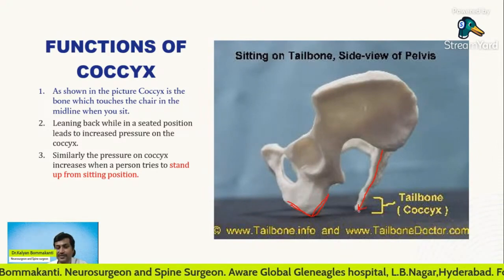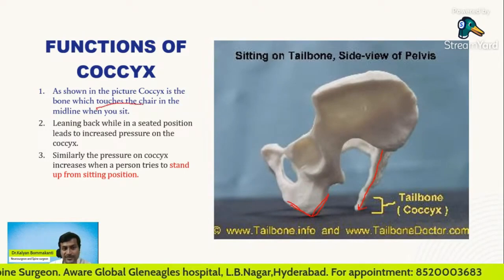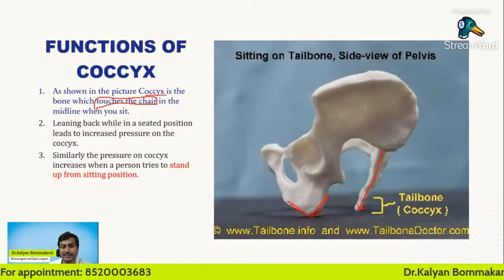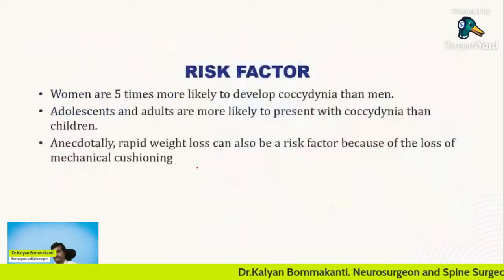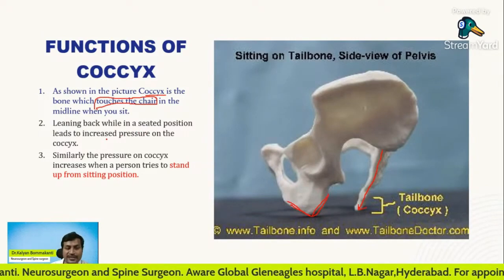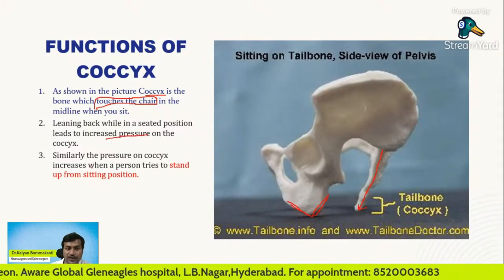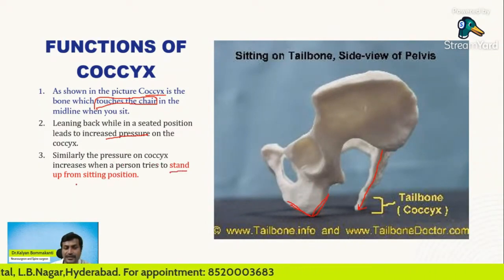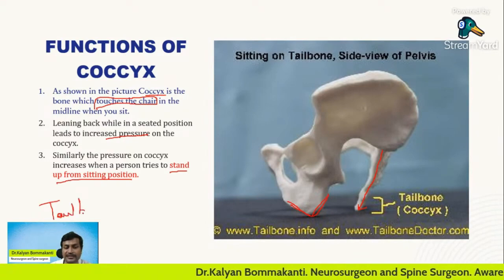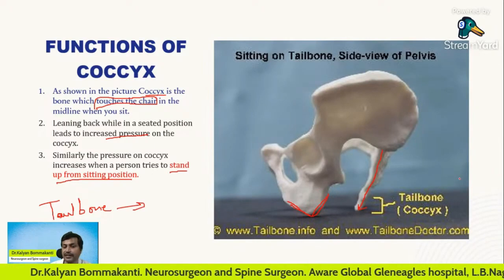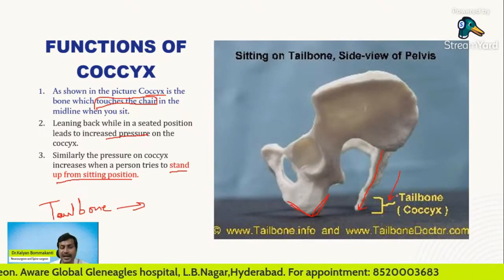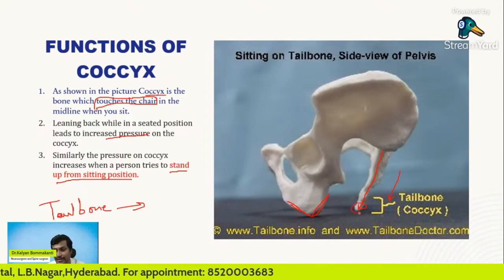These three parts of your sacrum and pelvis touch the chair when you sit, providing support to your body. In the midline, what touches the chair is the coccyx. Particularly when you lean backward in a sitting position, it leads to increased pressure on the coccyx. Similarly, the pressure on the coccyx increases when a person tries to stand up from a sitting position. So tailbone pain worsens when the patient sits, because the coccyx touches the chair or the hard surface and causes pain.